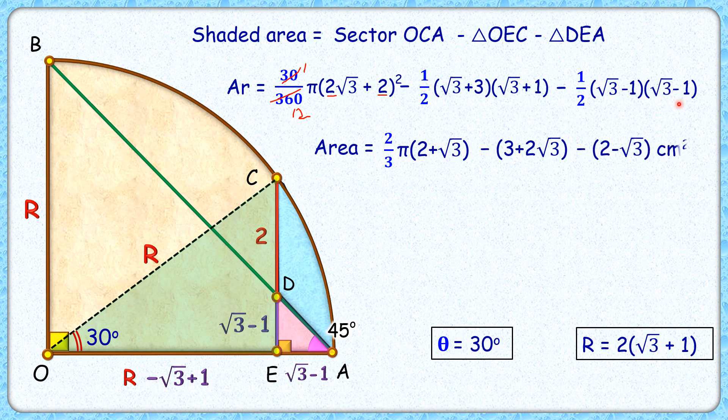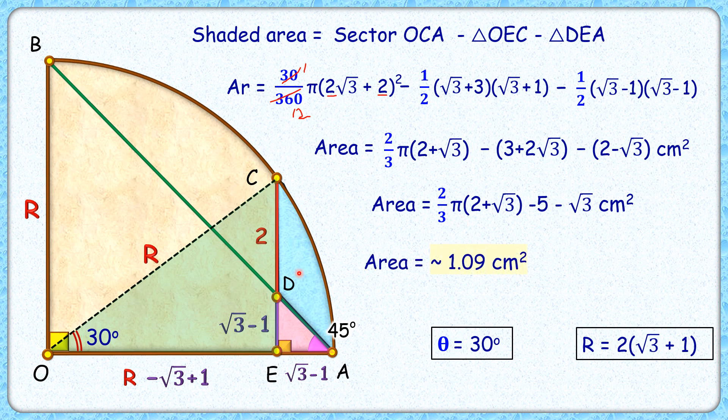Simplifying it further, we'll get area of this blue shaded region as 2 by 3 pi times 2 plus root 3 minus 5 minus root 3. Solving it to get in decimal form, we'll get area of this shaded region as approximately 1.09 centimeter squared, and that's our answer. I hope you enjoyed the solution. I will see you in the next video. Till then, tata, bye bye.